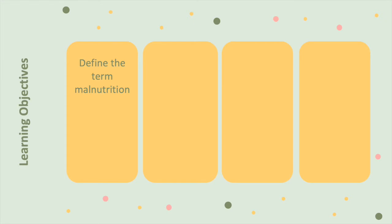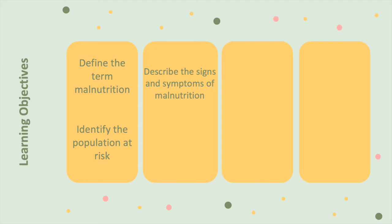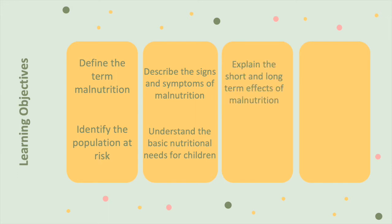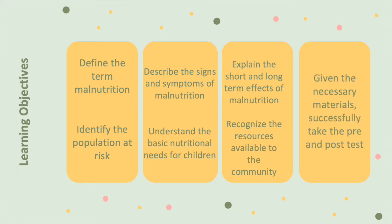Learning Objectives: to define the term malnutrition, identify the population at risk, describe the signs and symptoms of malnutrition, understand the basic nutritional needs for children, explain the short and long-term effects of malnutrition, recognize the resources available to the community, and given the necessary materials, successfully take the pre- and post-test.